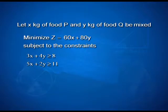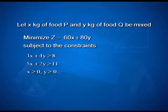The constraints are built on the requirement that the mixture must contain at least 8 units of vitamin A and 11 units of vitamin B. So the first constraint is 3x + 4y ≥ 8, and the second is 5x + 2y ≥ 11. Both x and y are non-negative, so x ≥ 0 and y ≥ 0. This is our complete linear programming problem that we need to solve.